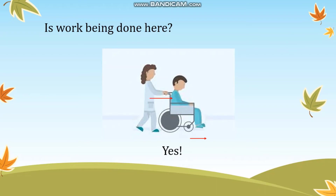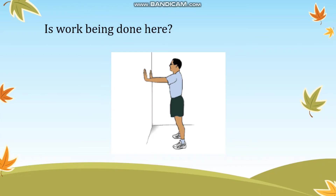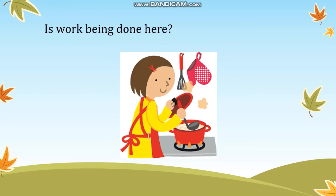The next picture shows a man trying to push the wall. Is work being done here? The answer is no. Work is not being done here because the man is trying to push the wall away from him, but the wall is not moving away from him. That is why work is not being done here.